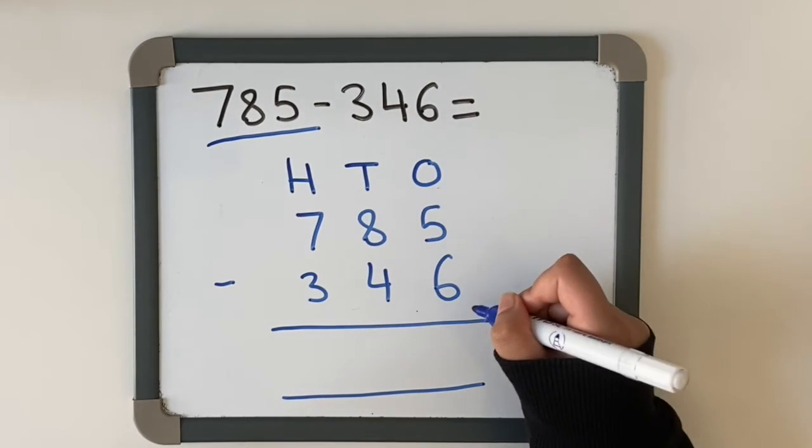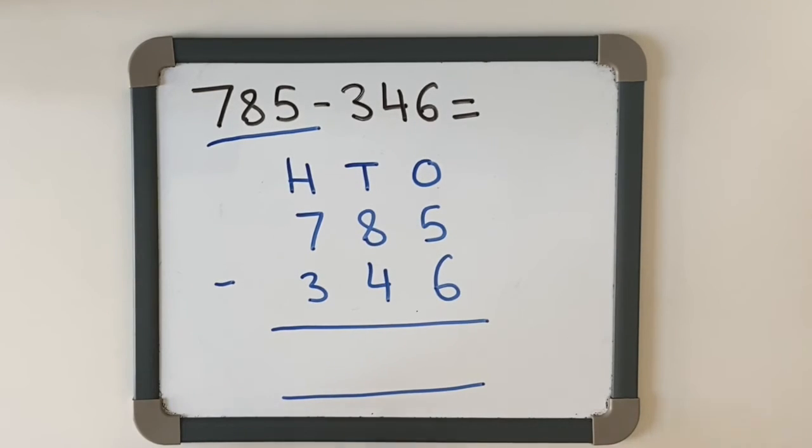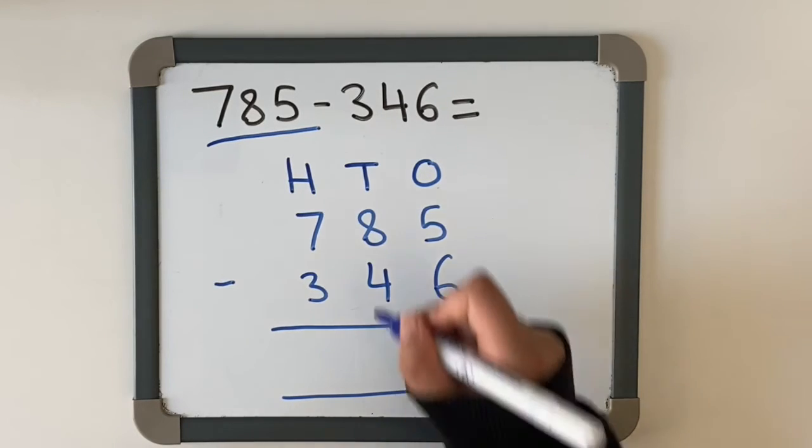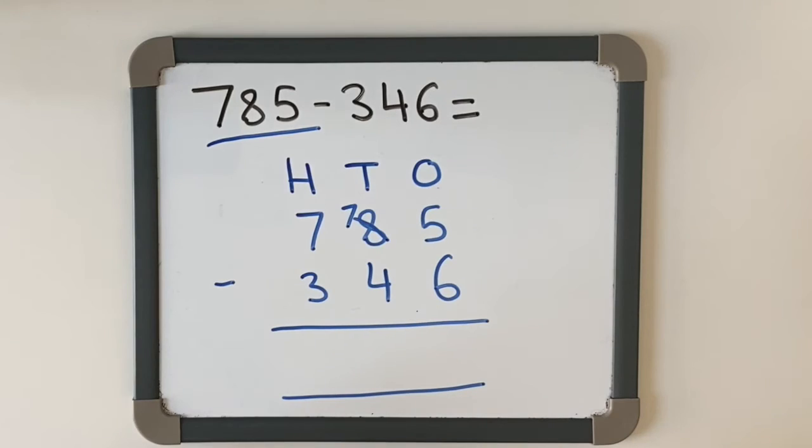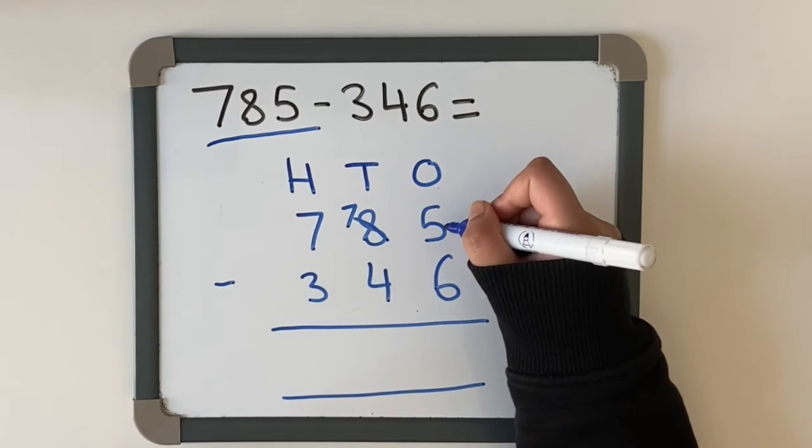So we need to borrow it off from the tens column, which is 80. So that's going to turn into 70, and we're going to take the 10 and put it in our ones column.